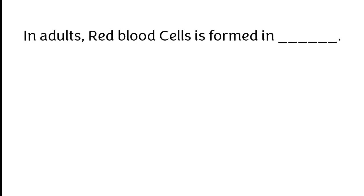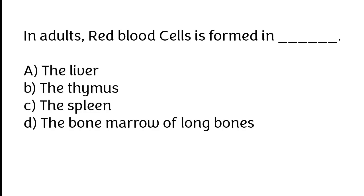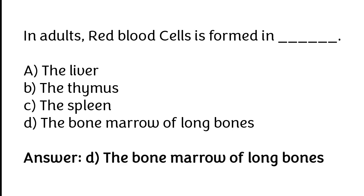In adults, red blood cells are formed in the liver, the thymus, the spleen, or the bone marrow of long bones. The correct answer is option D. In adults, red blood cells are formed in the bone marrow of long bones.